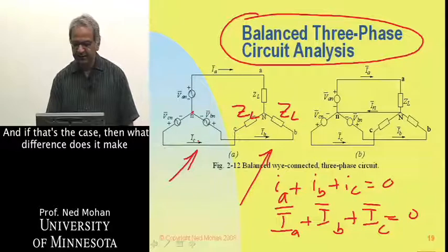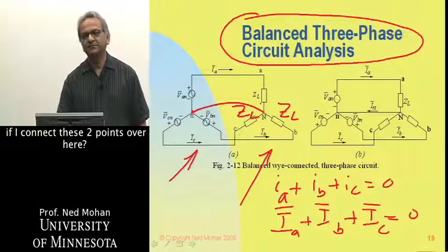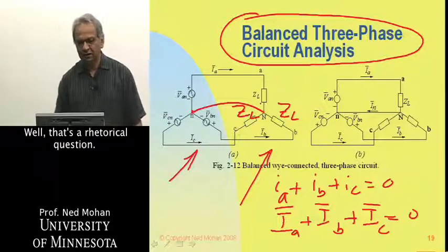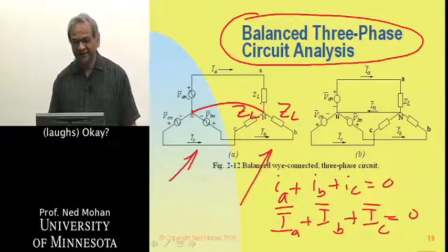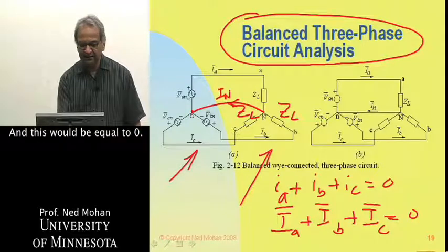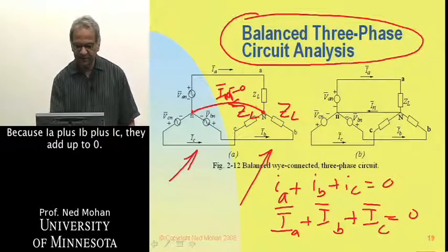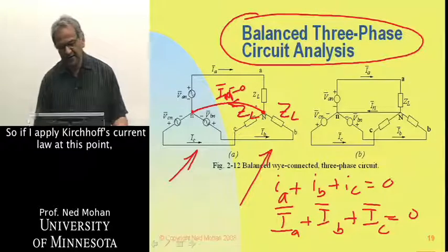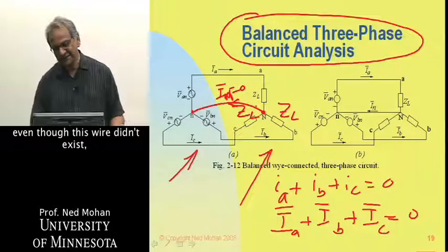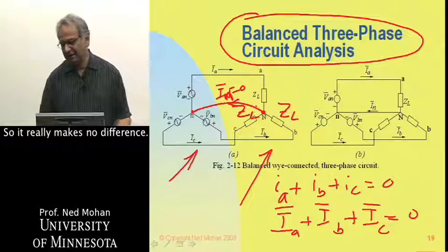If that's the case, what difference does it make if I connect these two neutral points over here? The answer is it makes no difference, because IA plus IB plus IC would equal this current IN here, and this would be equal to 0. IN would be 0 because IA plus IB plus IC add up to 0. So even though this wire didn't exist, I can hypothetically insert that wire, but there will be no current on it, so it really makes no difference.